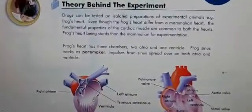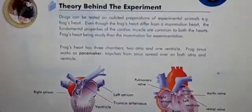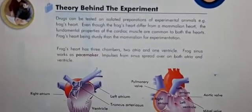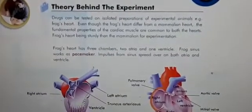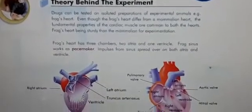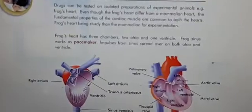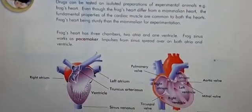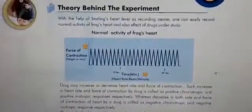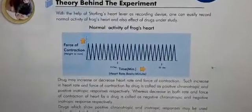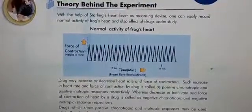Even though the frog's heart differs from a mammalian heart, the fundamental properties of the cardiac muscle are common to both. Frog's heart has three chambers: two atria and one ventricle. The frog's sinus works as a pacemaker. Impulses from the sinus spread over both atria and ventricle. Using Starling's heart lever as a recording device, one can easily record normal activity of the frog's heart and also the effect of drugs under study.